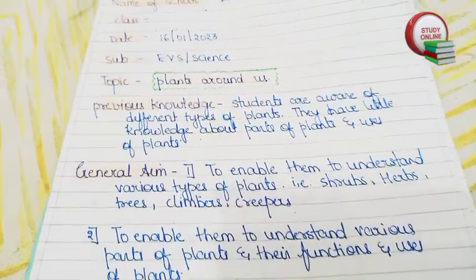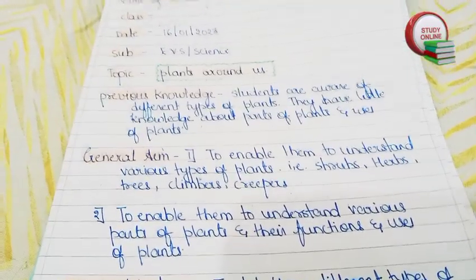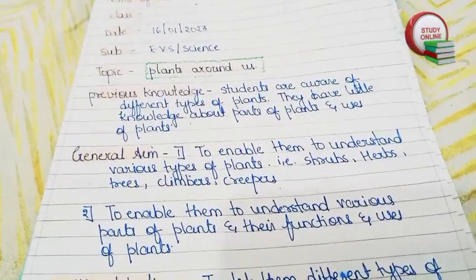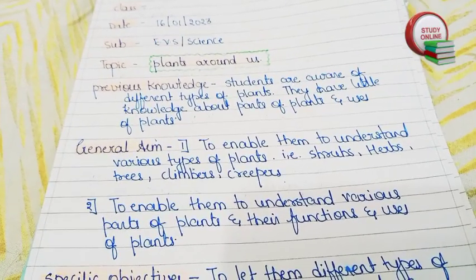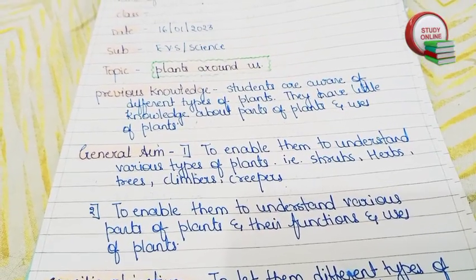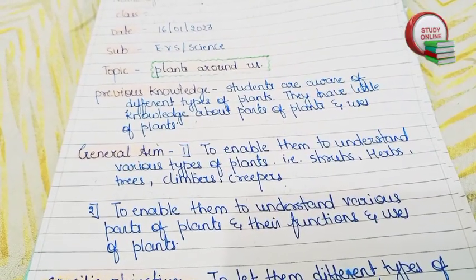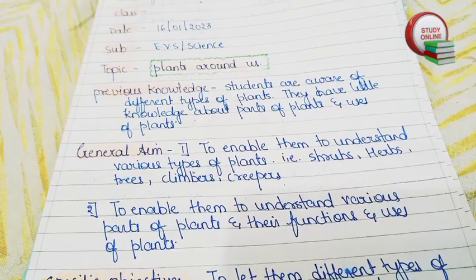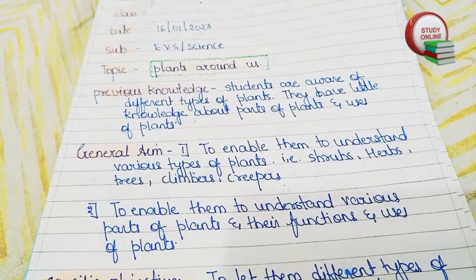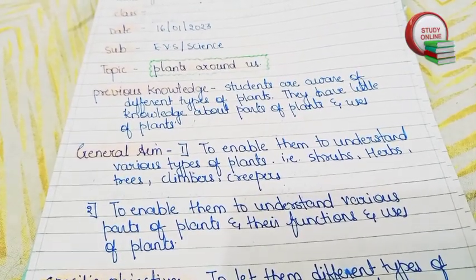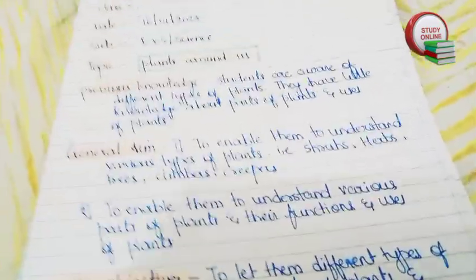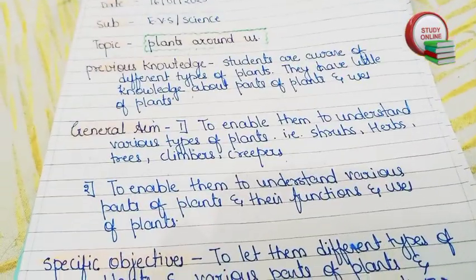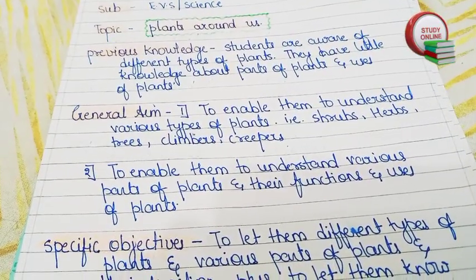Here you can see the general aims — what we basically want to teach to students, the aim or motive behind teaching this particular topic. The aim is to enable them to understand various types of plants like shrubs, herbs, trees, climbers, and creepers, to understand various parts of plants and their functions, and the uses of plants.